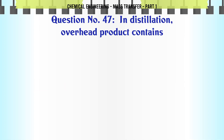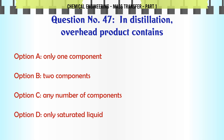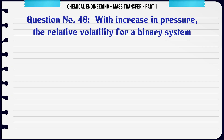In distillation, overhead product contains: A. Only one component. B. Two components. C. Any number of components. D. Only saturated liquid. The correct answer is Any number of components.